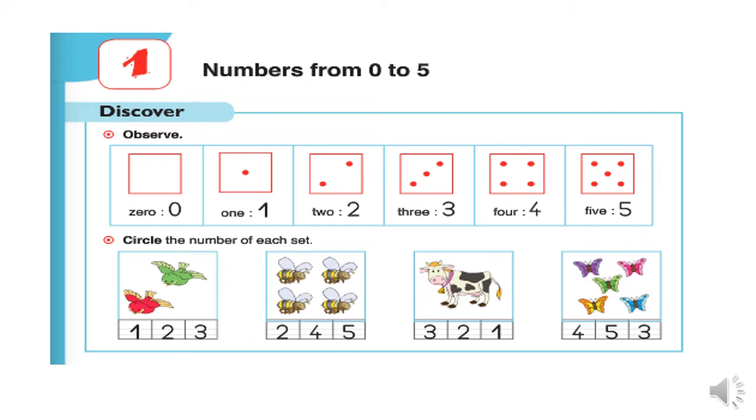In this square, we have how many dots? Excellent! We have one dot. So, this represents number one. One in letters and one in numbers.